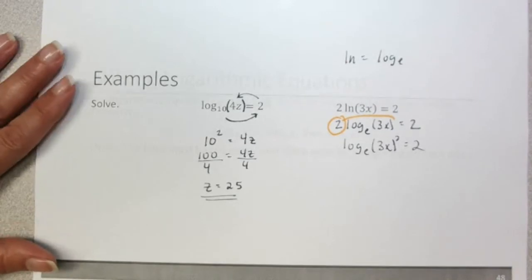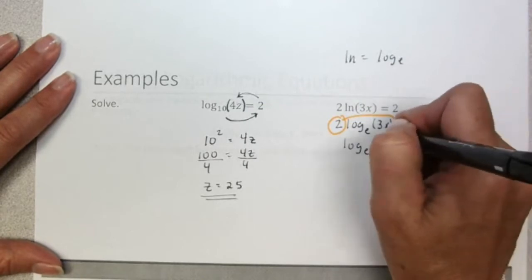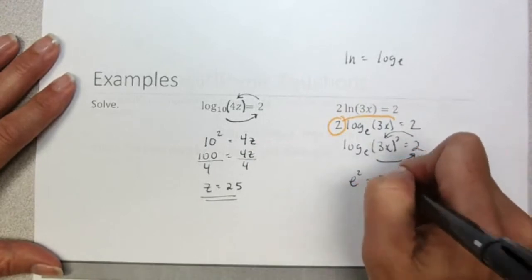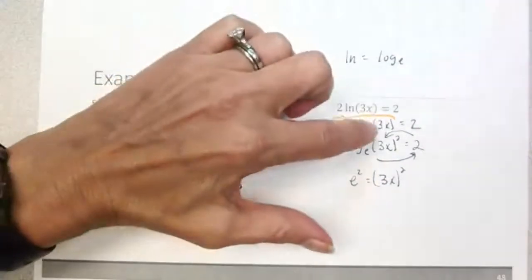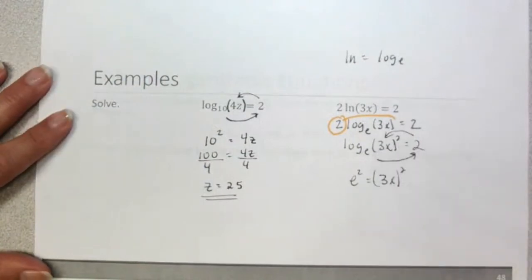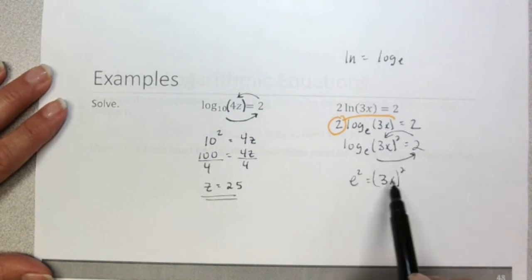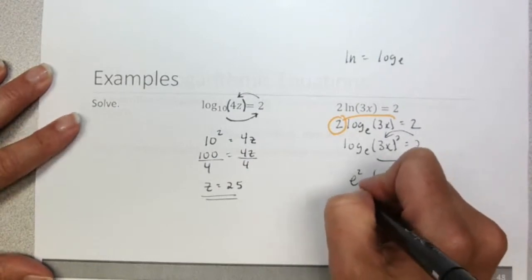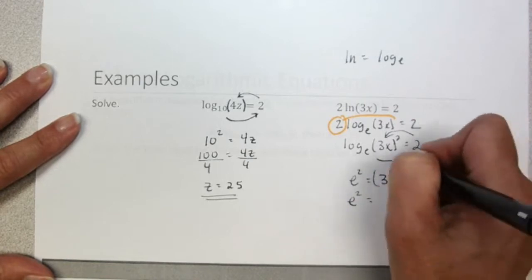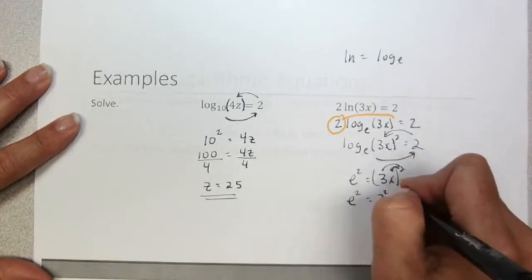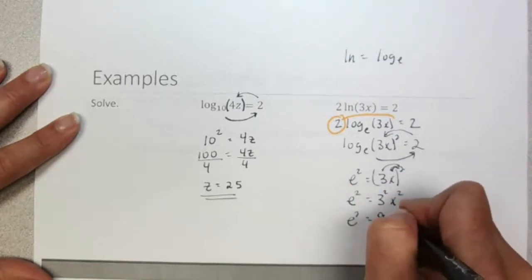Now we can go ahead and convert that. We can say e to the second power is equal to (3x) squared. We need to be careful with those parentheses because it's not just x that's being squared — the 3 is also being squared. So we distribute that exponent of 2 to both factors: e squared equals 3 squared times x squared, which is 9x squared.